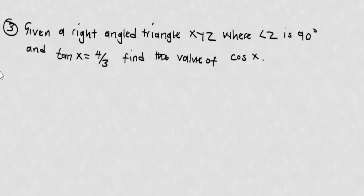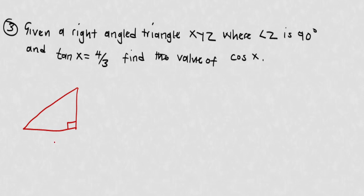The next question: given a right-angle triangle XYZ where angle Z is 90 degrees and tan X equals 4 over 3, find cos X. We don't have a diagram so we imagine a right-angle triangle and label the vertices X, Y, and Z, placing Z at the right angle.